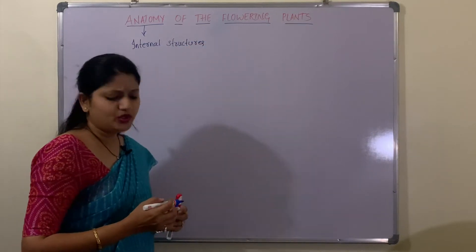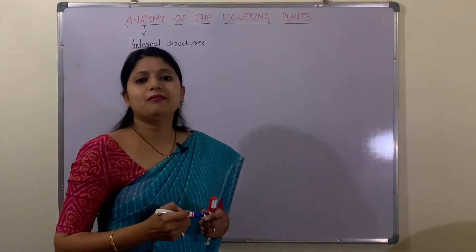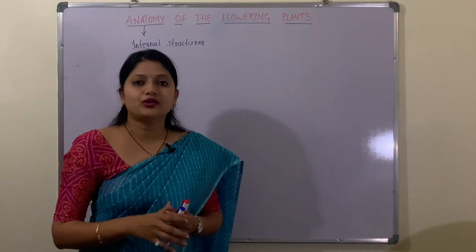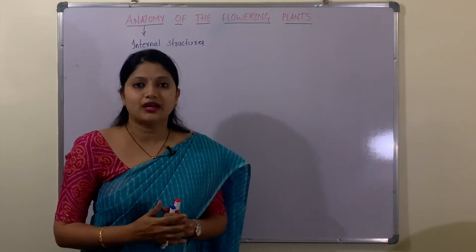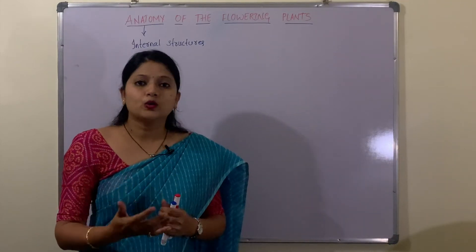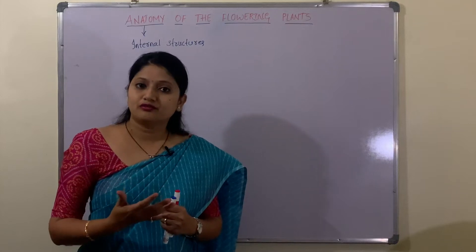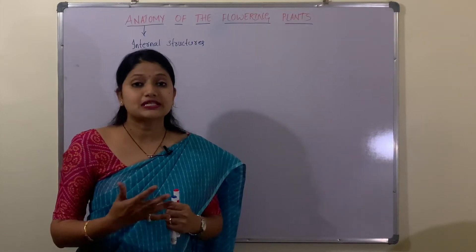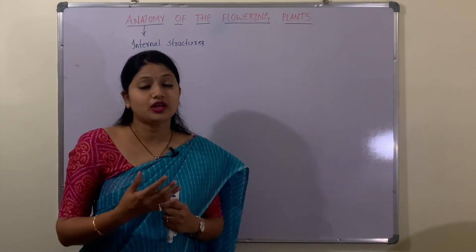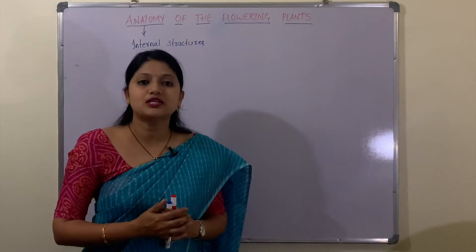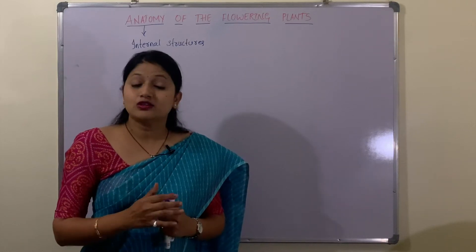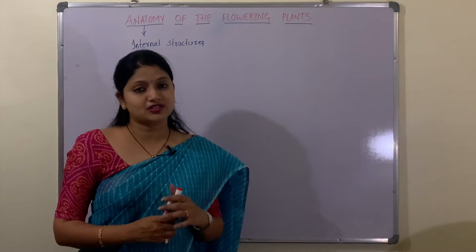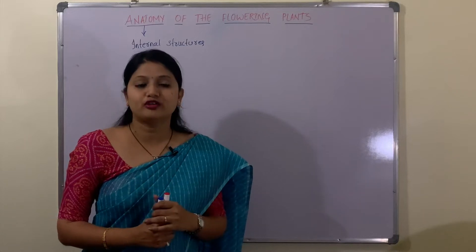Now what do you mean by these internal structures? When you see a plant, you can easily identify the parts of the plant — that is root, stem, leaves, flowers, branches, fruits, seeds. These are the parts which you can observe through your naked eyes, and they are called the external characteristics, which we study under morphology.